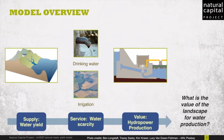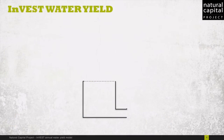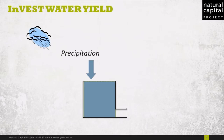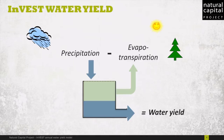InVEST water yield is a basic rainfall-runoff model. Think of it as a bucket, where precipitation fills the bucket with water, but some of that water is lost due to evaporation and transpiration by plants, and what remains is the water yield. Essentially, precipitation minus evapotranspiration equals water yield.